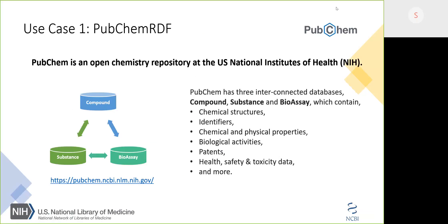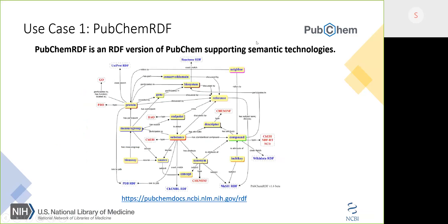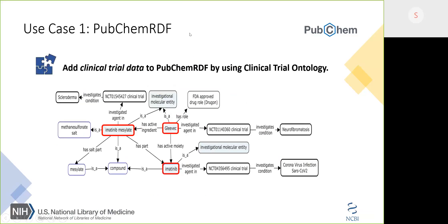PubChem organizes data through three distinct interrelated databases. PubChem now has more than hundreds of millions of unique chemical compounds contributed by over 700 independent organizations around the world, and it increases on a daily basis. PubChem RDF is an RDF version of PubChem. It allows users to access PubChem content through semantic technologies such as RDF, triple stores, and SPARQL queries. PubChem RDF data has more than 80 billion triples organized through over 16 subgraphs. These subgraphs can be loaded together or separately into local triple stores and queried with SPARQL to answer scientific questions.